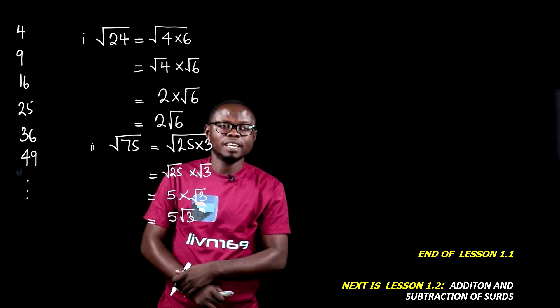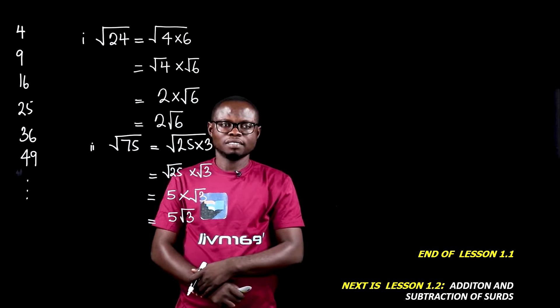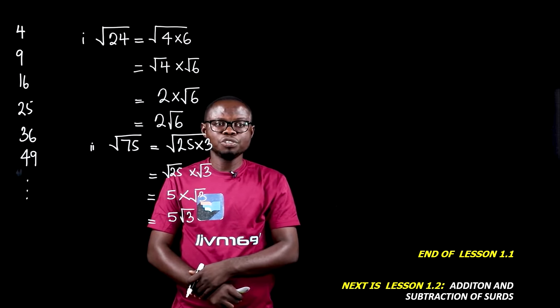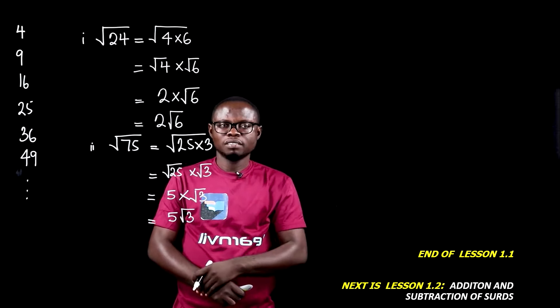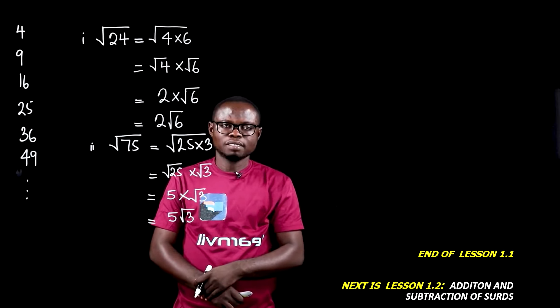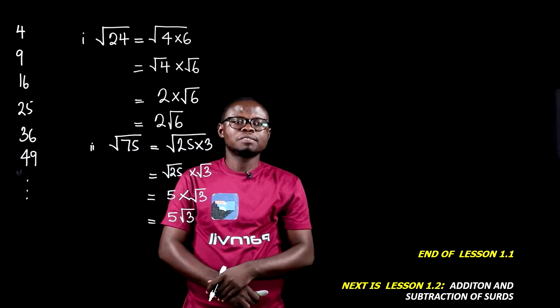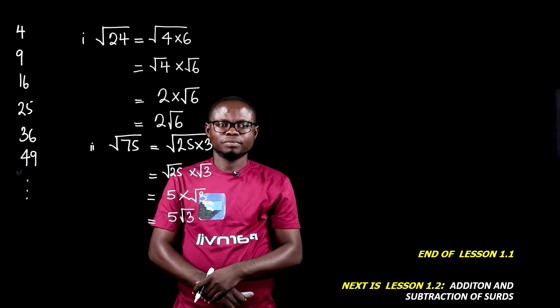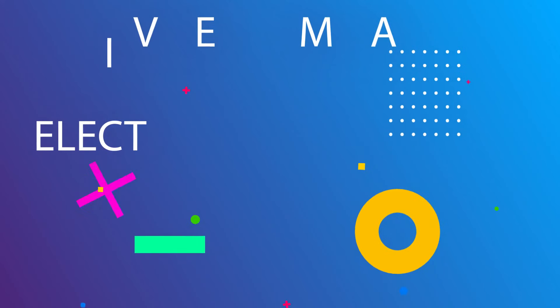This brings us to the end of this lesson. We have learned how to reduce surds into their simplest or basic form. Remember, it is very important to identify which perfect square is a factor of the given number under the radical sign. In our next lesson, we'll learn to add and subtract surds. See you in the next lesson. Thank you.